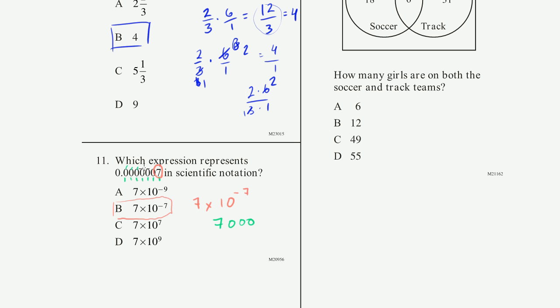When we had a decimal like this, you counted the actual digits. You included the 7, right? That's where you got 10 to the minus 7. When you have something like this, you just count the 0's. So 7,000 would be 7 times 10 to the third.